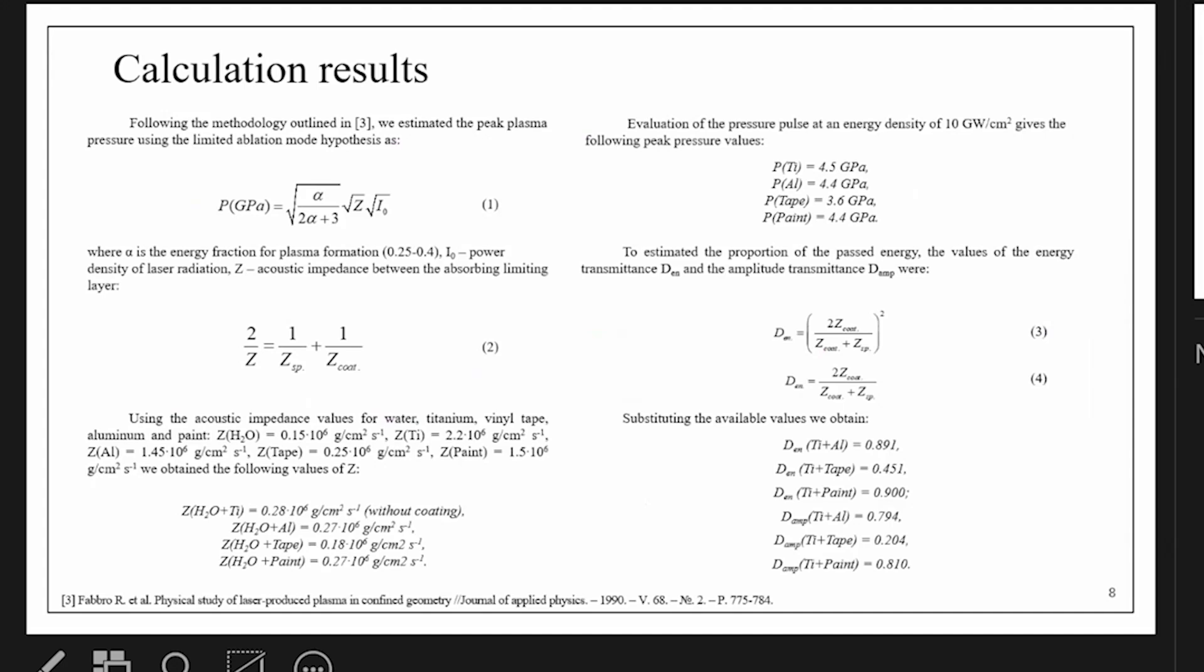This slide presents calculations confirming the previously stated results concerning residual stresses based on the impedance of the coating material and water, which was used as a confining layer. The pressure extended by the plasma on the surface was calculated using formula 1. From the results obtained, it can be concluded that the most effective material for protective coating were black paint and aluminum foil.